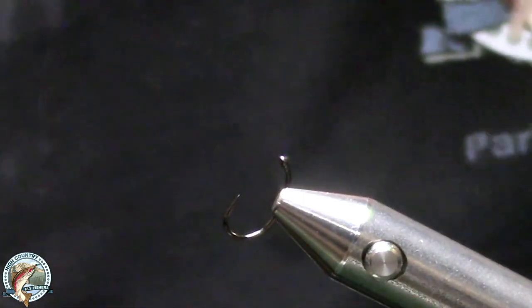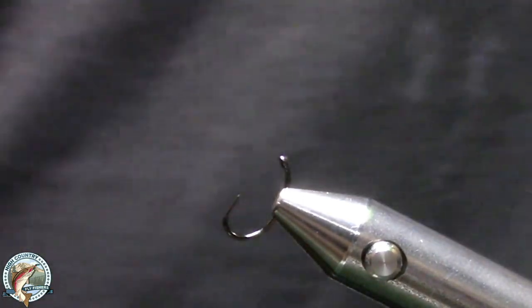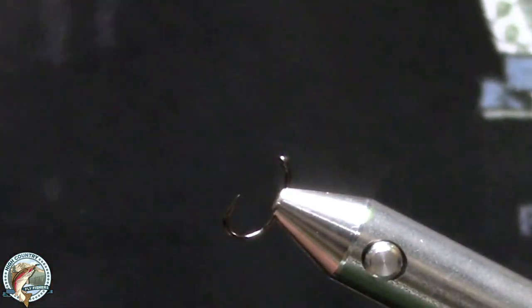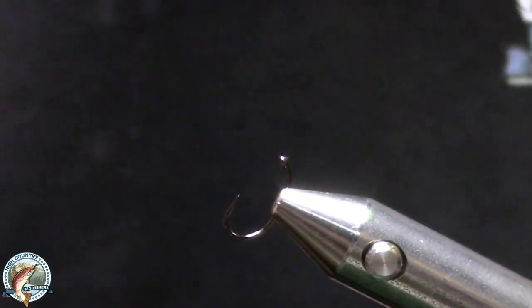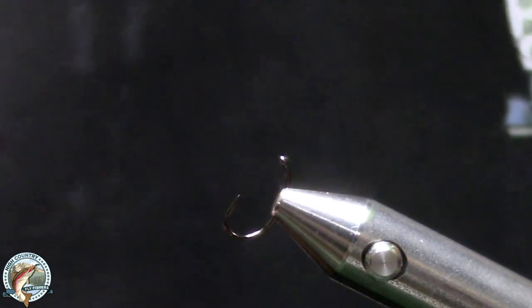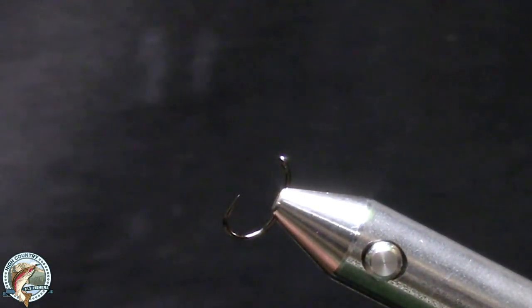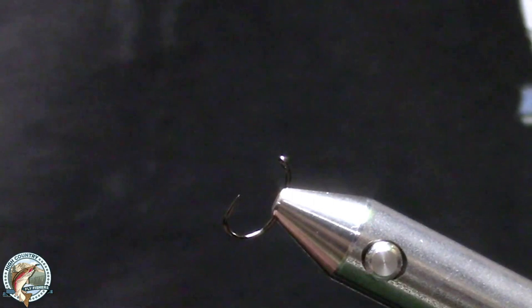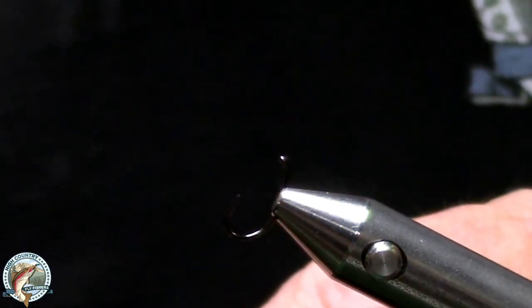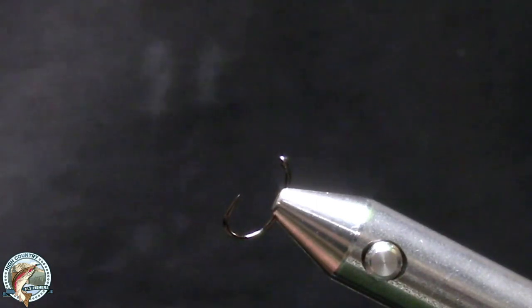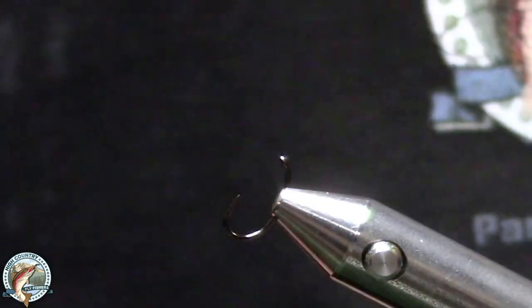We're going to put a bead on a hook. Some people like to take the hook, put it in their hand, and put the bead on. If you look at the bead, you'll see that one side has a smaller hole and the other side is bigger. So the small hole goes over the point of your hook.